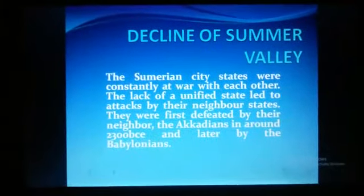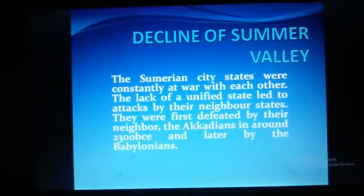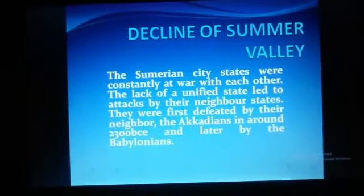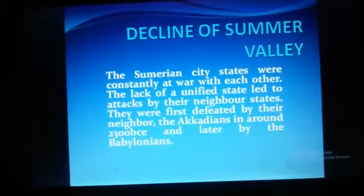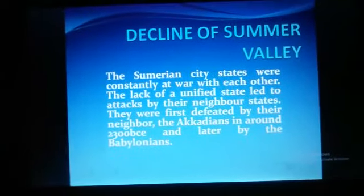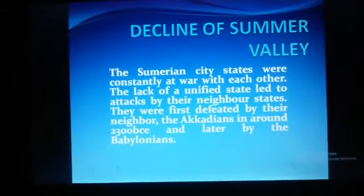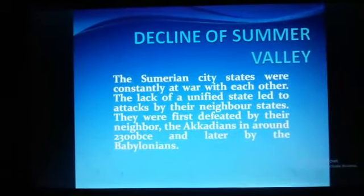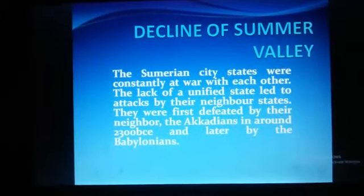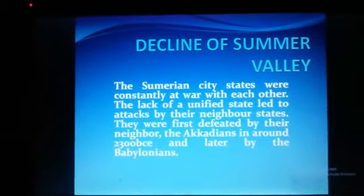How did the Sumerian civilization come to its downfall? Class 6, Sumerian city-states were constantly at war with each other. They always fought amongst themselves. The lack of a unified state led their neighbors to attack them. They were first defeated by the Akkadians around 2300 BCE, and later by the Babylonians.